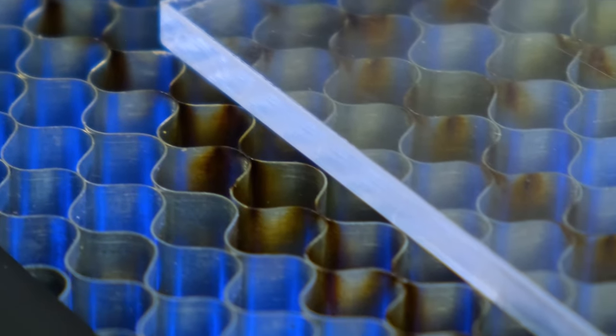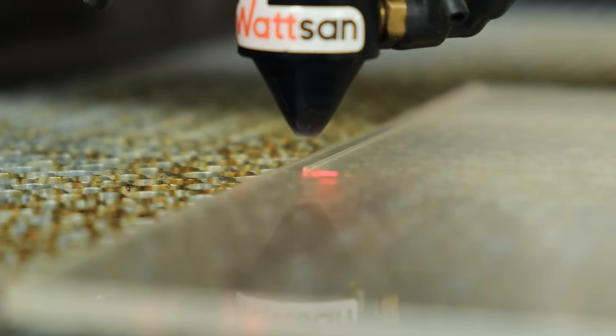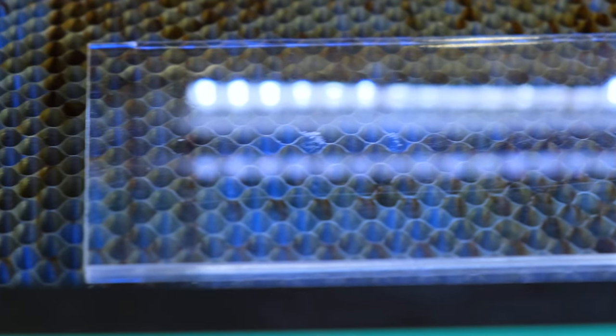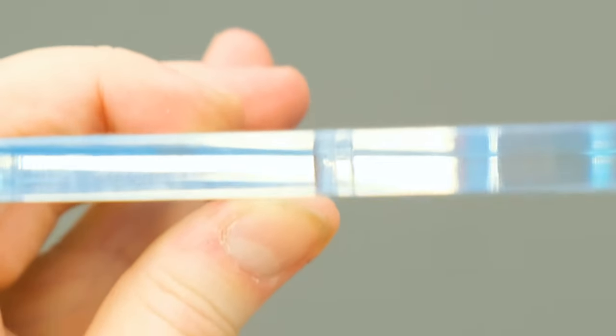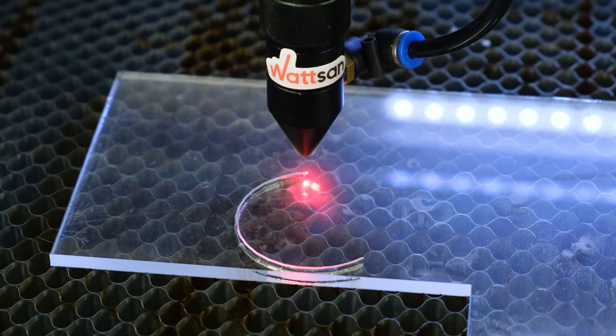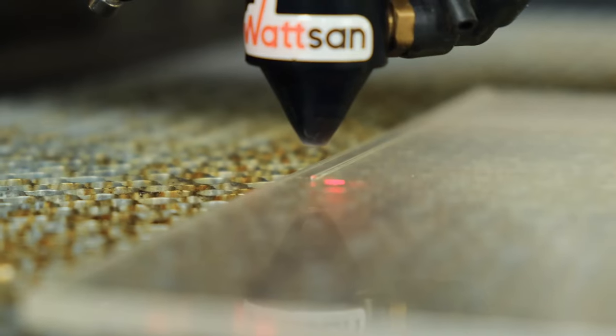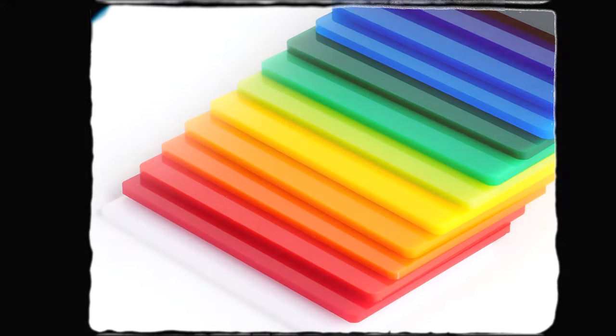But before we start choosing an acrylic cutting machine, let's find out what is acrylic. Acrylic, also plexiglass or acrylic glass, is a special polymer plastic. This material is available in different versions: transparent, mirrored and even colored.